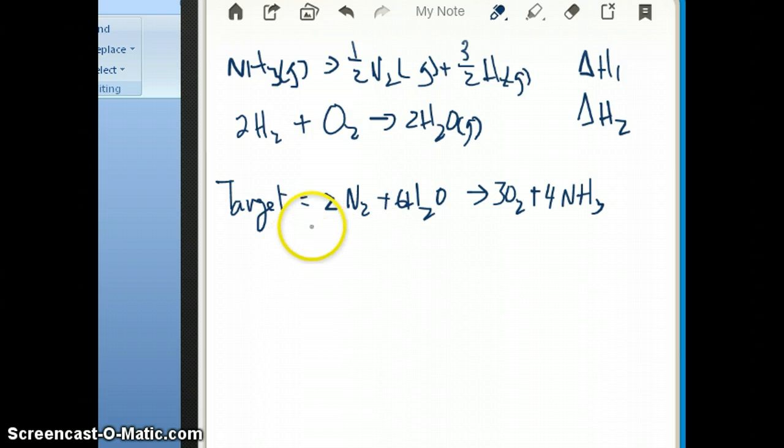Just like when you're doing balancing, you want to find unique species, which is basically a species that only exists in one of the reactions. If you look at the target reaction here, you notice that there are four species: N2, H2O, oxygen, and NH3. And you notice that, for example, N2 exists only in this reaction, reaction number one, but it doesn't exist in reaction number two. That makes it a good target to start with.